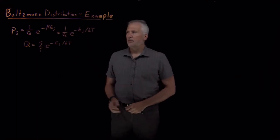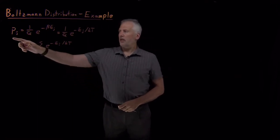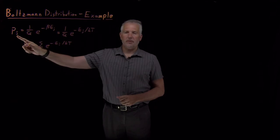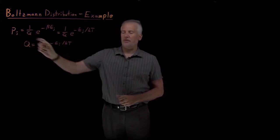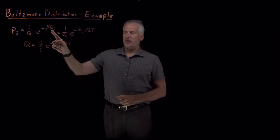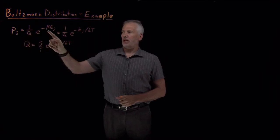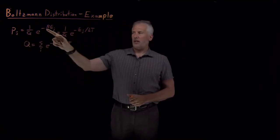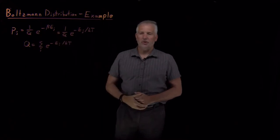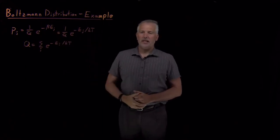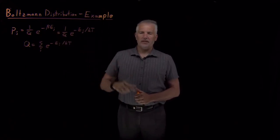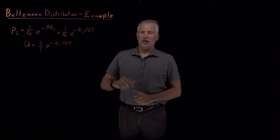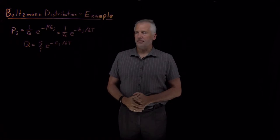We've seen that the Boltzmann probability distribution tells us how likely a system is to occupy a particular state, the jth state of a system. If we know the energy of that state, we can calculate p sub j, as long as we also know beta, and we've seen that beta is inversely proportional to the temperature, 1 over kT, where k is Boltzmann's constant.